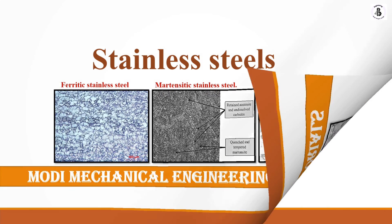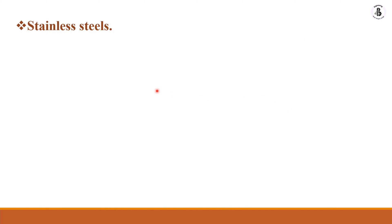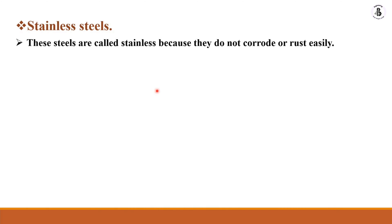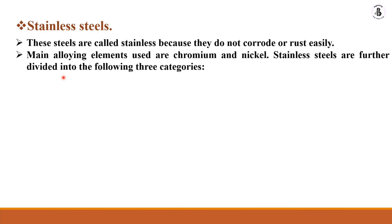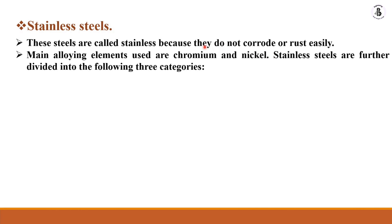Stainless steels are known as stainless because they do not corrode or rust easily in open environments. This material has wide applications in food industries, pharmaceutical industries, milk industries, and many more. The main alloying elements used to make stainless steels are chromium and nickel. These two major constituents are added to provide anti-corrosion properties.